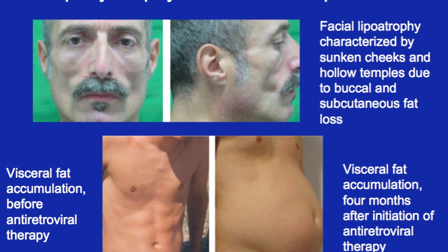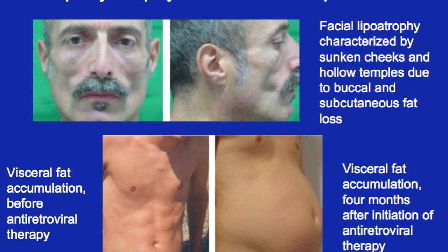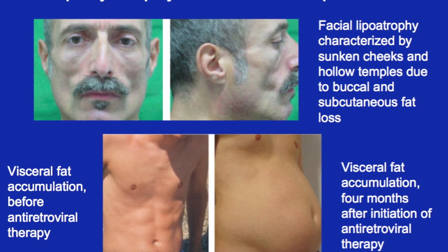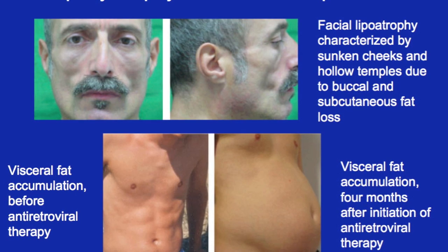And then you get fat added elsewhere — the buffalo hump on the back, breasts grow. You get this pot belly; actually the butt shrinks and you lose the fat on the butt and the legs. The photo on the bottom shows visceral fat accumulation before antiretroviral therapy, and on the right is four months later after initiation of antiretroviral therapy.